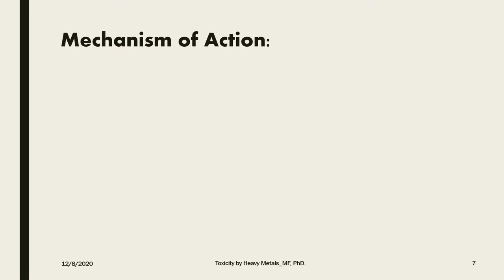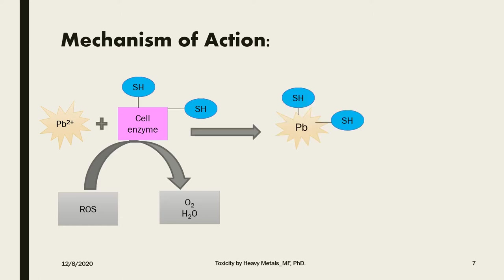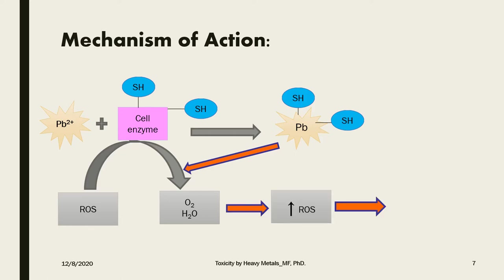The mechanism of action of heavy metals as general protoplasmic poisons works as follows: a cell enzyme with sulfhydryl groups is responsible for converting reactive oxygen species in the cells into water and oxygen. When the cell is exposed to a heavy metal such as lead, it binds to the sulfhydryl groups of the enzyme, leading to inhibition of that conversion. This increases reactive oxygen species in the cells, leading to cell apoptosis and death.